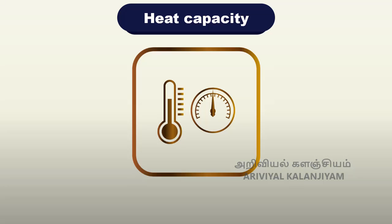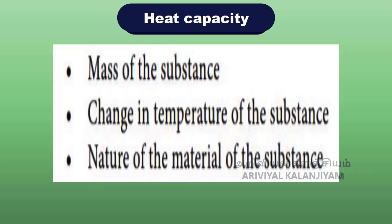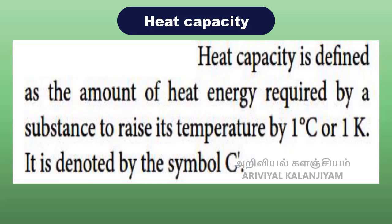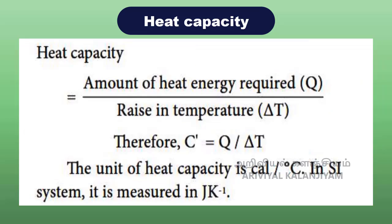Heat capacity: In general, the amount of heat energy gained or lost by a substance is determined by three factors: mass of the substance, change in the temperature of the substance, and nature of the material of the substance. Different substances require different amounts of heat energy to reach a particular temperature. This property is known as heat capacity. Heat capacity is defined as the amount of heat energy required by a substance to raise its temperature by 1 degree Celsius or 1 Kelvin. It is denoted by the symbol C'. Heat capacity C' equals the amount of heat energy required Q divided by the change in temperature delta T. The unit of heat capacity is calorie per degree Celsius, or in the SI system, Joule Kelvin⁻¹.